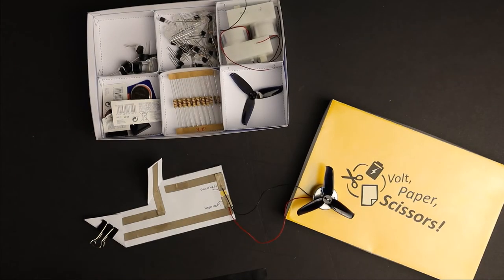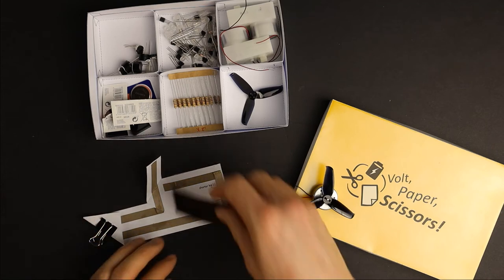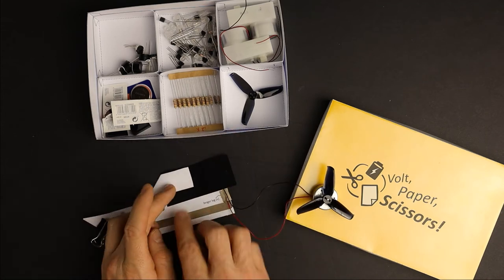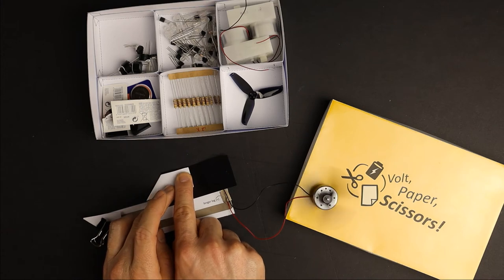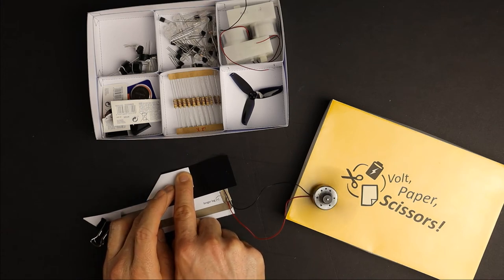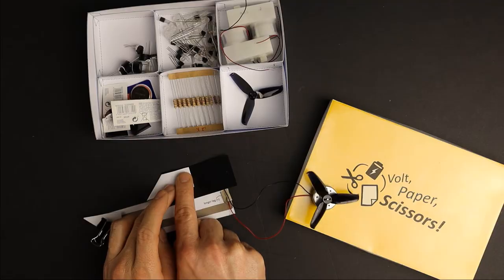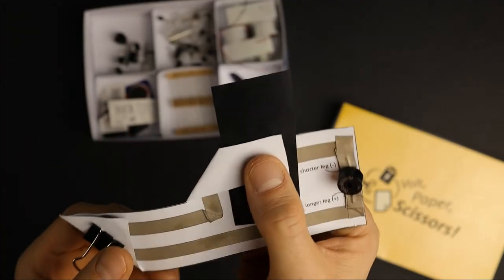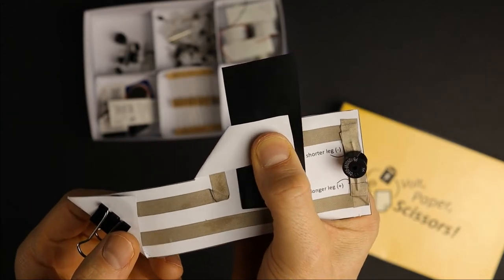You can also use the Velostat with my Easy Circuit template to play around with other components. Think of it as a thin layer that conducts electricity if there is pressure applied to it. The more pressure, the more electricity can flow. Or to be more precise, it is like a resistor that decreases its value when pressed.